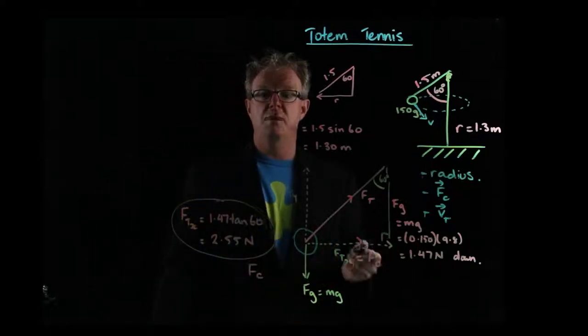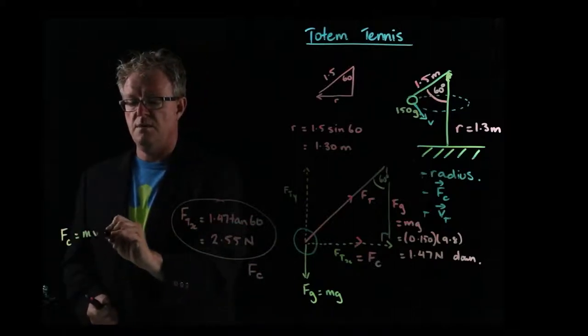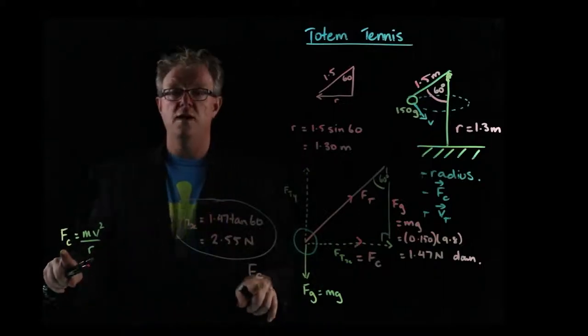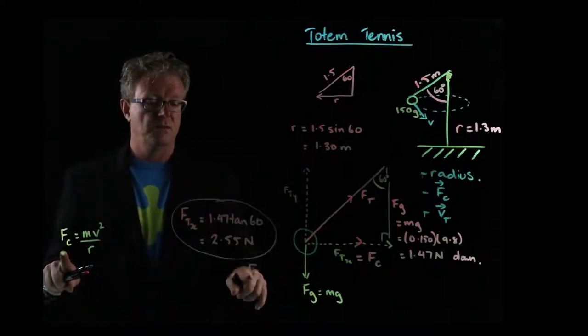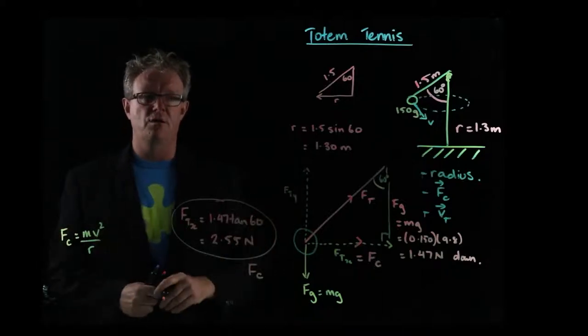And remember that the centripetal force had the equation F equals mv squared on r. Well, we know a value for that now, 2.55. We know the mass of the ball, we know the radius, so therefore we can find the velocity.